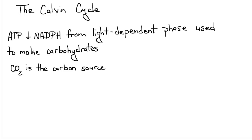It's the carbon fixation step of photosynthesis. In the Calvin Cycle, ATP and NADPH from the light-dependent phase are used to make carbohydrates, and it uses carbon dioxide as the carbon source.